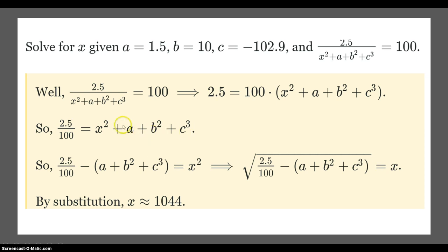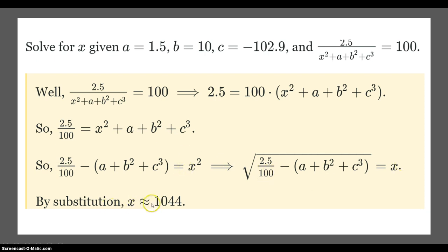Then we subtract this quantity from both sides of the equation — that term goes away — and now we have this term, so now we're here with our equation. This implies we take the square root of both sides, and x is approximately 1044.